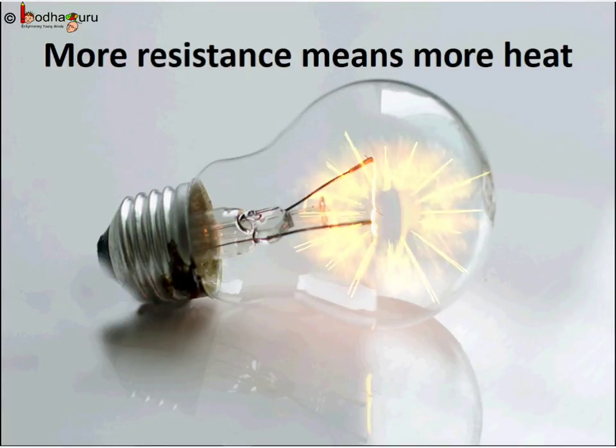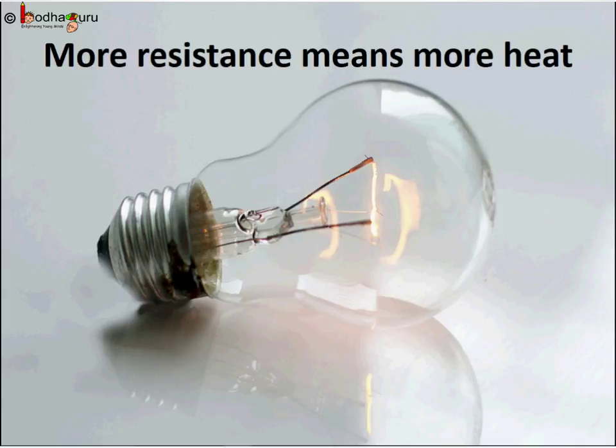The filament is made thin so small cross section area and long due to spiral wire, so all these three factors make resistance higher and hence more heat is generated and some part of the heat gets converted into light energy that we see. So that is a good use of heat energy.